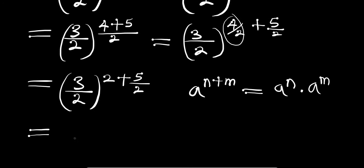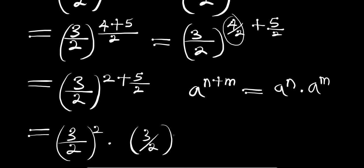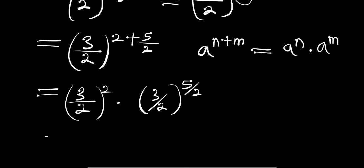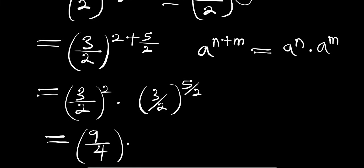Applying this identity, we get (3 divided by 2) to the power of 2, times (3 divided by 2) to the power of 5 divided by 2. Now, (3/2) squared gives us 3² over 2², which is 9 divided by 4. So we have 9 divided by 4, times (3 divided by 2) to the power of 5 over 2.